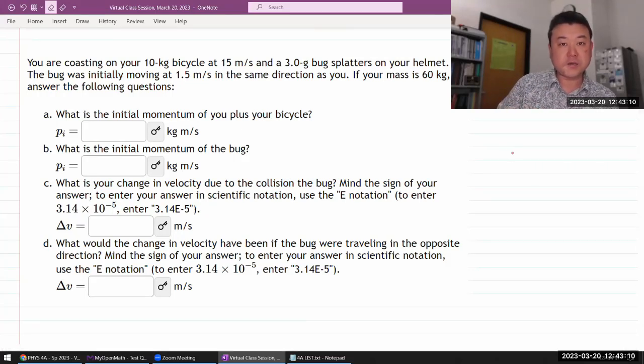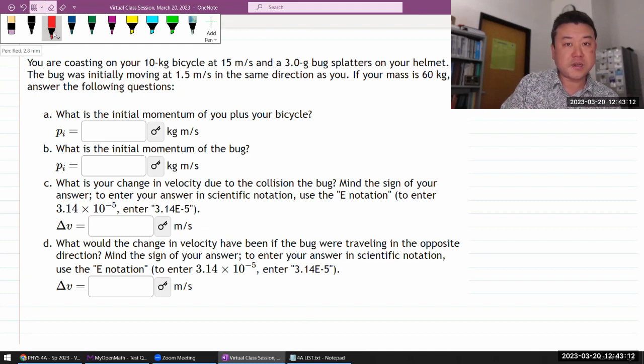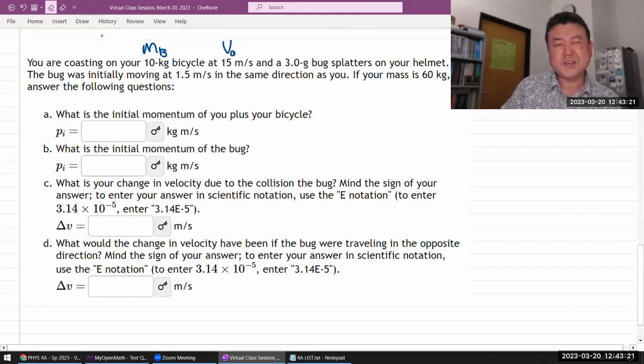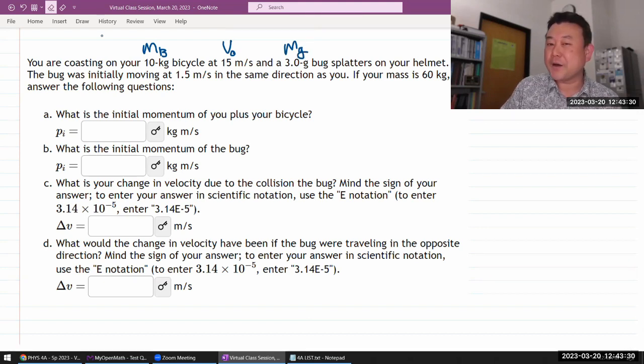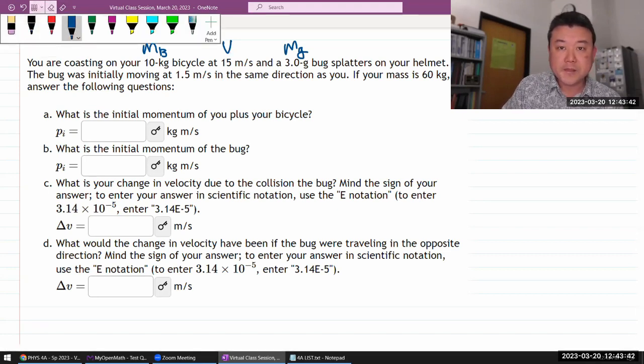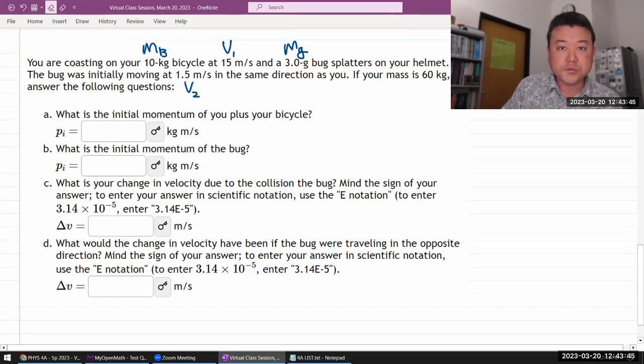So it says you're coasting on your, let me just start labeling things, on your some mass bicycle at some speed, let me say initial speed, and a three gram bug, some mass. What's the start with a B? Let me say G. Some mass bug splatters on your helmet. The bug was initially moving at, oh, that's interesting. So let me actually change the labels a little bit. This is going to be V1, and the bug's speed will be V2. In the same direction as you, if you're mass capital M, answer the following questions.